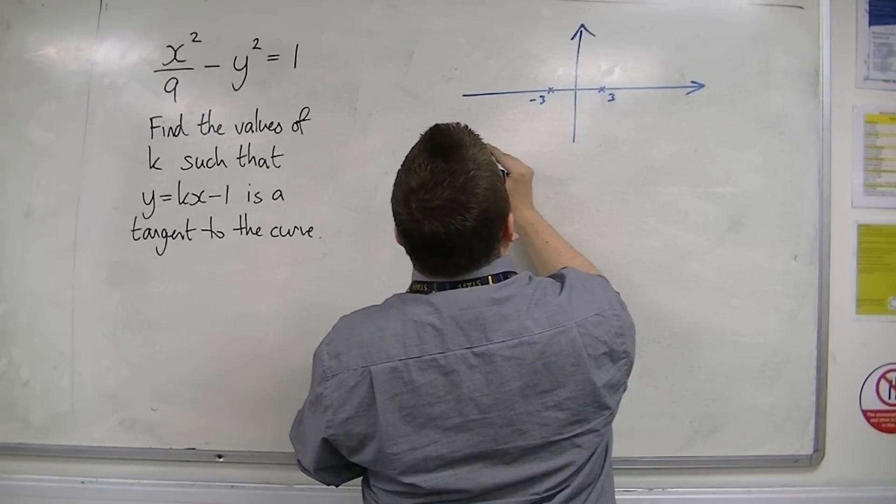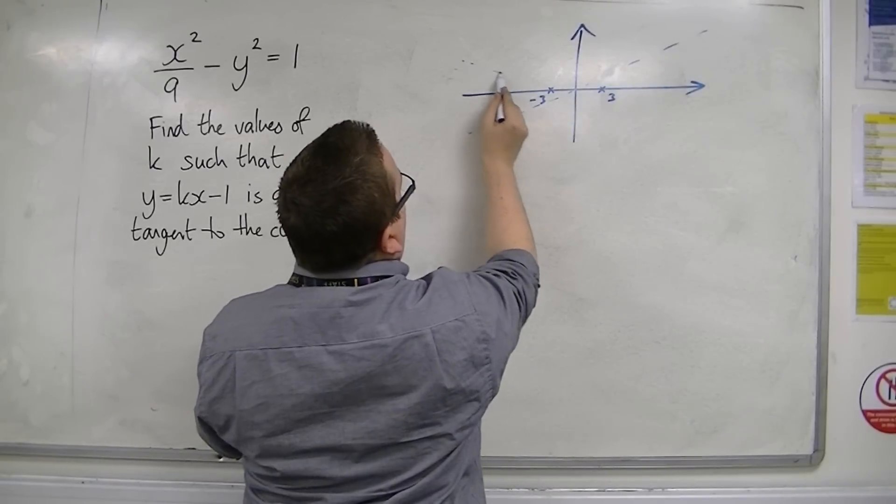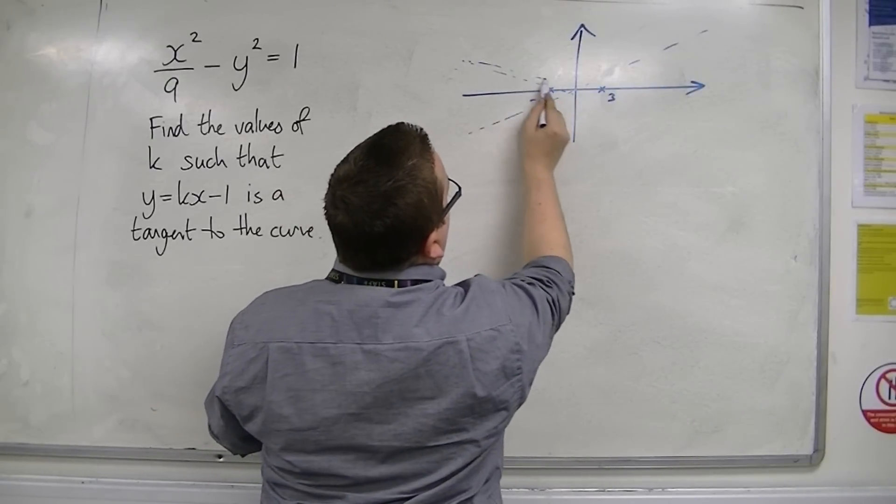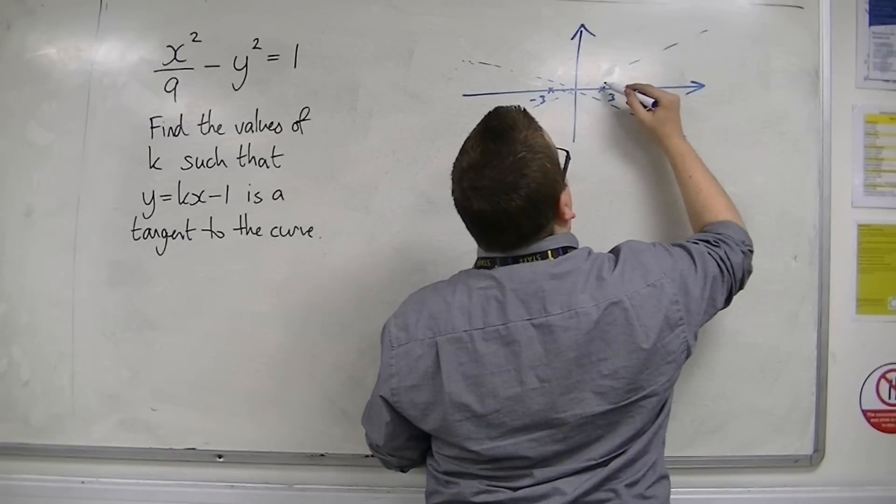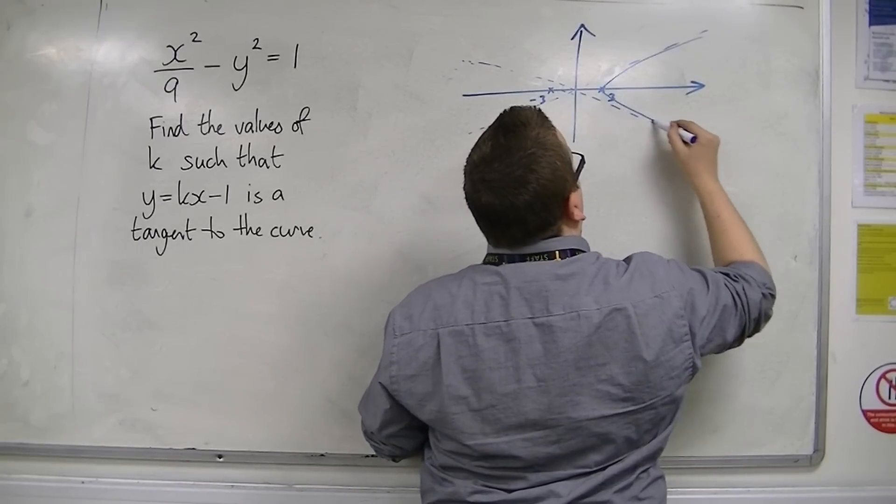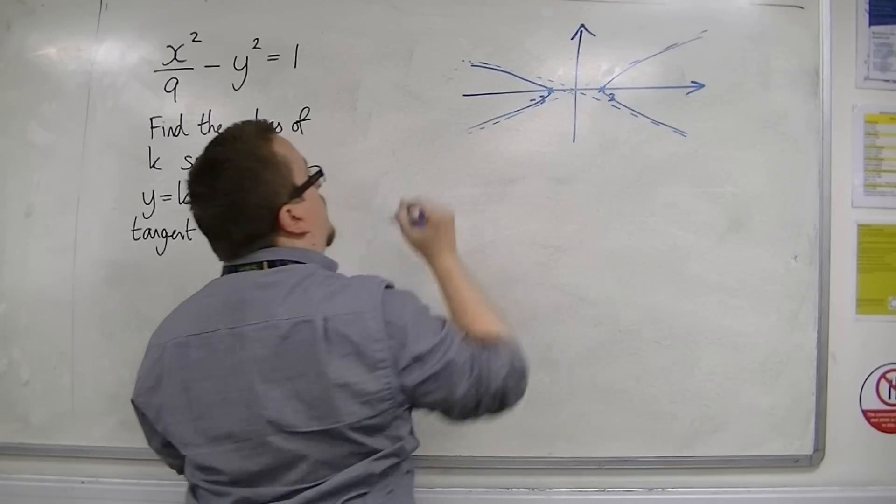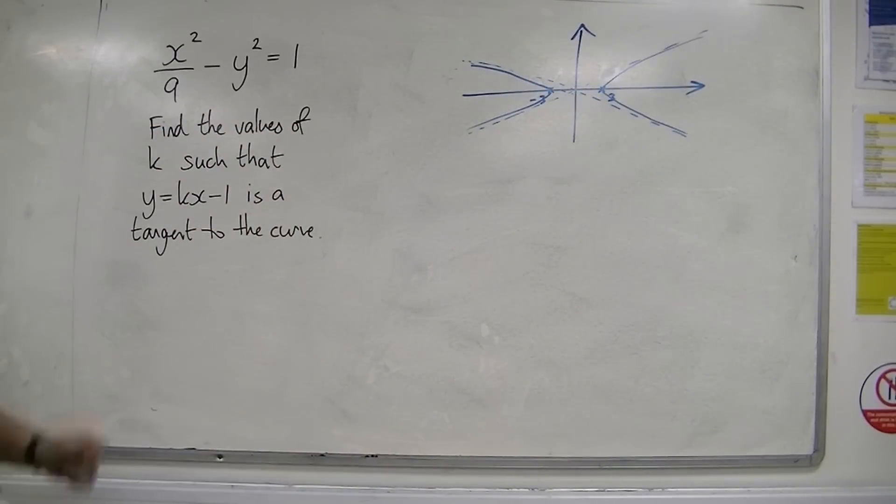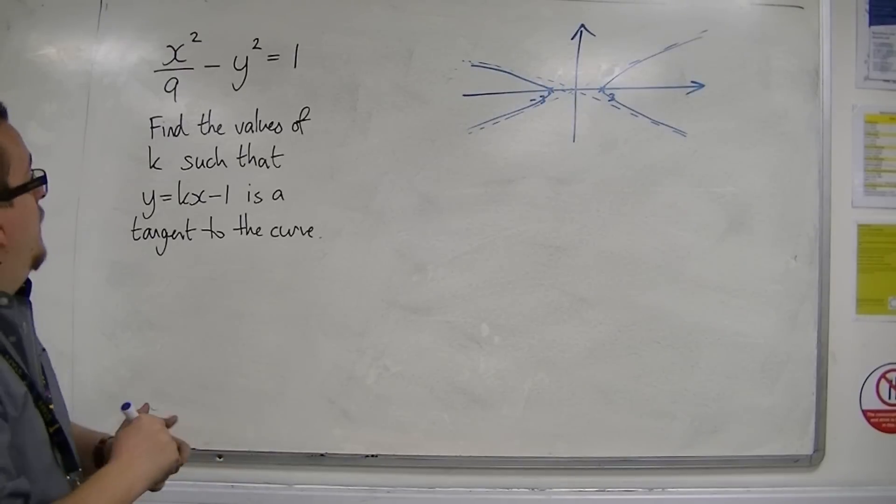Well, if they're my asymptotes, always best to join some asymptotes first. And there's my hyperbola. It's only going to be a rough sketch.